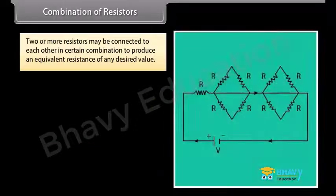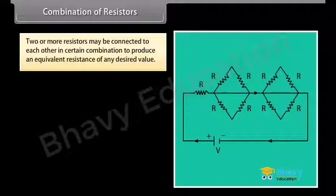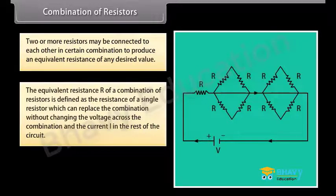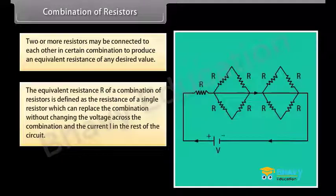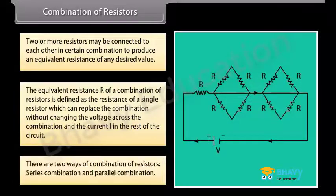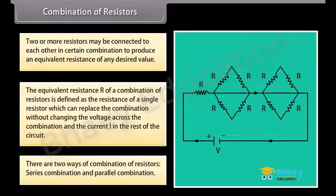Two or more resistors may be connected to produce an equivalent resistance of any desired value. The equivalent resistance R of a combination is defined as the resistance of a single resistor that can replace the combination without changing the voltage across it and the current in the circuit. There are two ways of combining resistors: series combination and parallel combination.